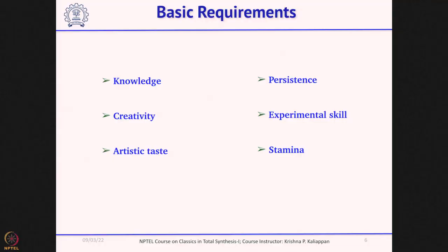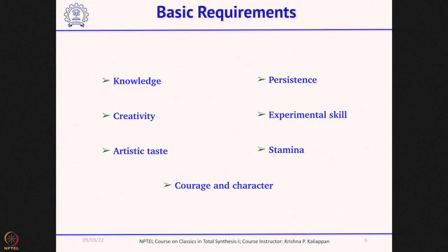Experimental skill does not come naturally; it takes time. Then there is stamina. Most times in a synthetic laboratory you have to stand and do reactions, and you can imagine synthetic chemists work very hard - it is not 8 hours of laboratory work, they work much more. So they need both physical and mental stamina. Mental stamina is also very important because of the failures they face - they should be very strong mentally and physically. And of course, one should be courageous and have character: yes, I can do it. Whenever they fail, they should get the confidence: yes, I will do it, I will make it work. These are the 7 basic requirements for a synthetic chemist to successfully carry out total synthesis.